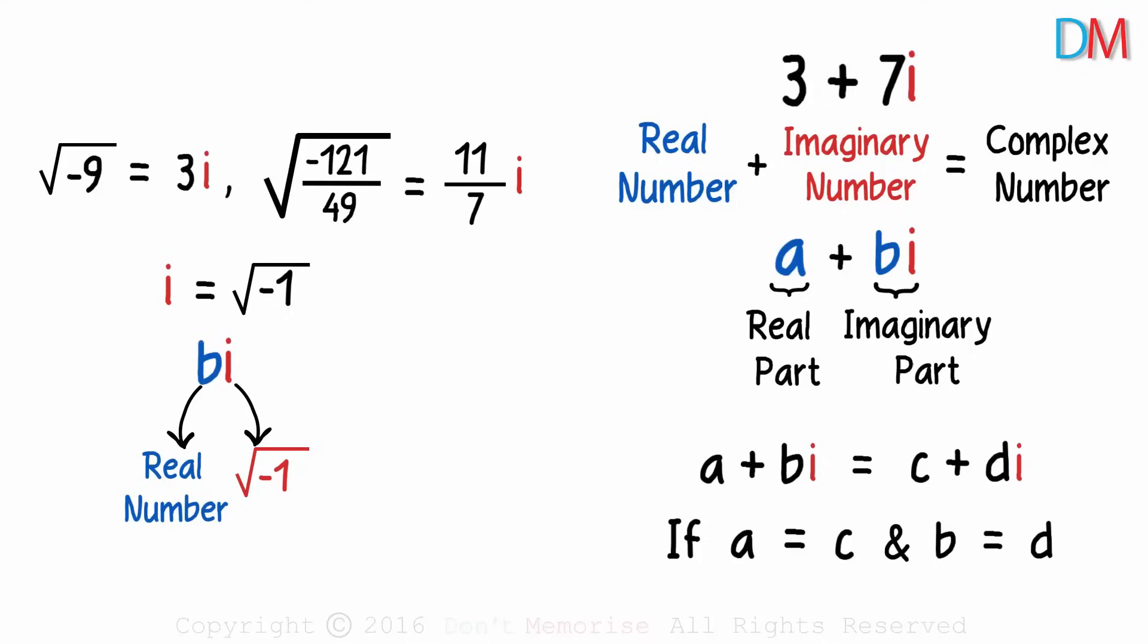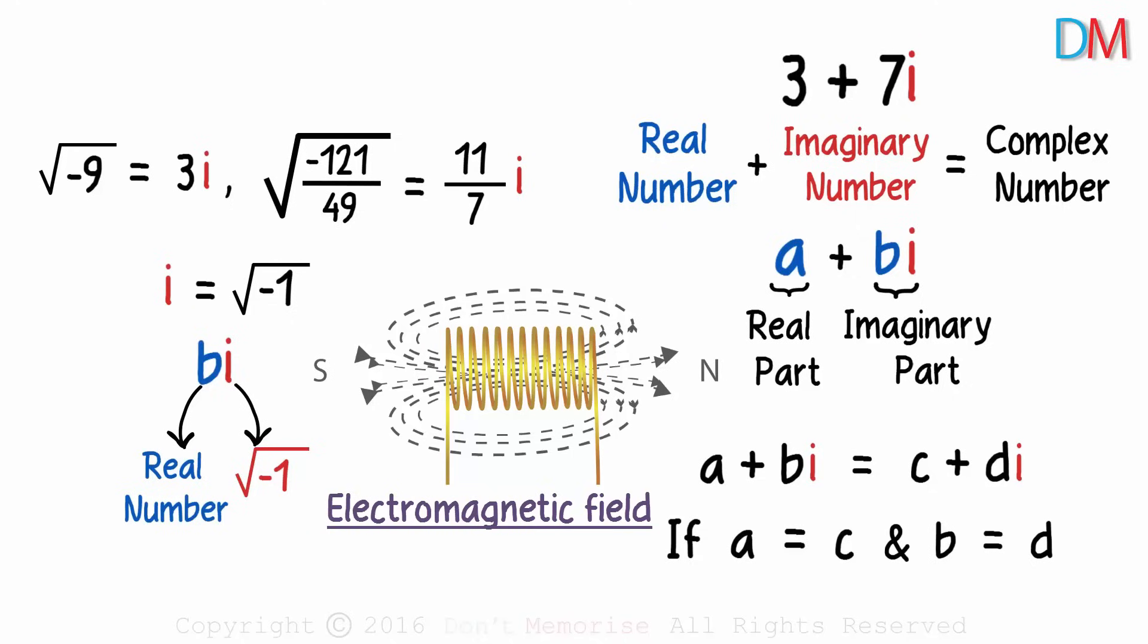They are also used in electromagnetism where rather than trying to describe an electromagnetic field by two real quantities separately, they are described as a single complex number of which electric and magnetic components are simply the real and imaginary parts. How exactly are they used here? Well, it's an advanced topic which we will cover in our graduation level math videos.